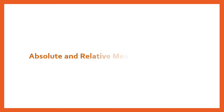There are two concepts of dispersion. The first is the absolute measure of dispersion. The second is the relative measure of dispersion. Let's see what these mean and how they are useful.